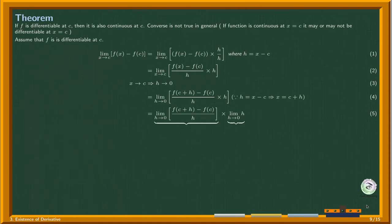Apply the product rule for limits. Since the function is differentiable at c, the limit of f(x) minus f(c) over h as h approaches 0 is defined and finite.